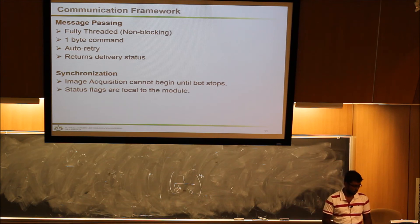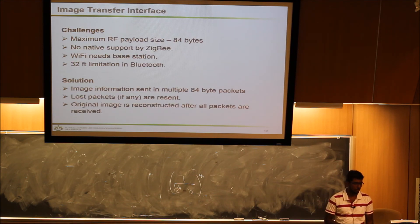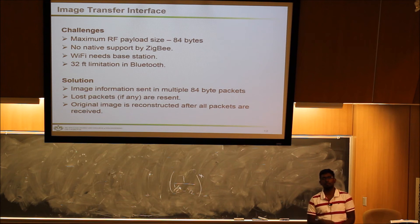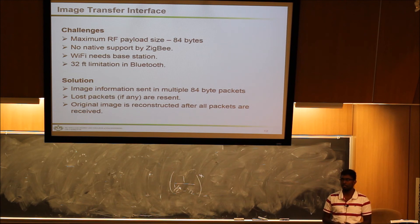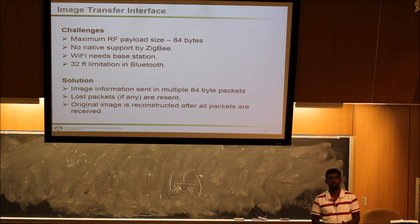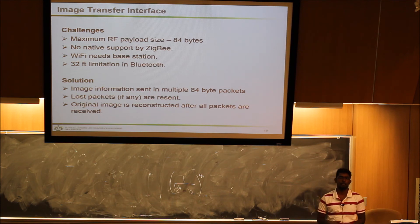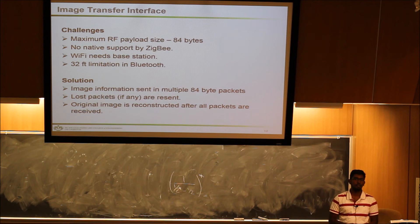The key challenge in transferring the image was that XBee by design is not for this high volume data. Every image is going to be 70 KB to 300 KB in our expected range. Since one packet is just 84 bytes of data, that's the maximum RF payload that every Zigbee packet can handle.